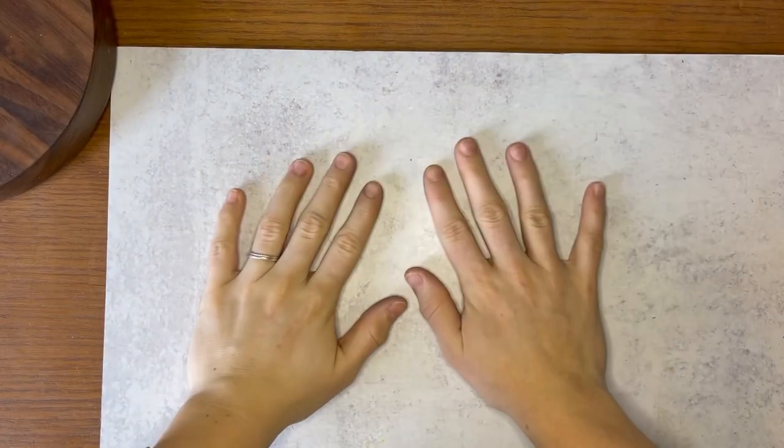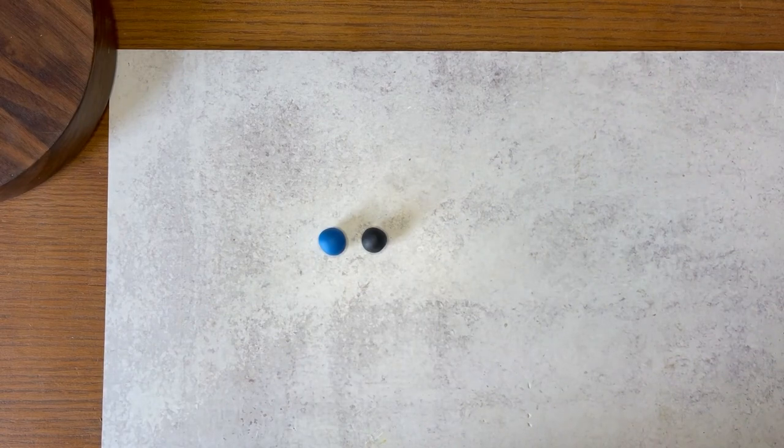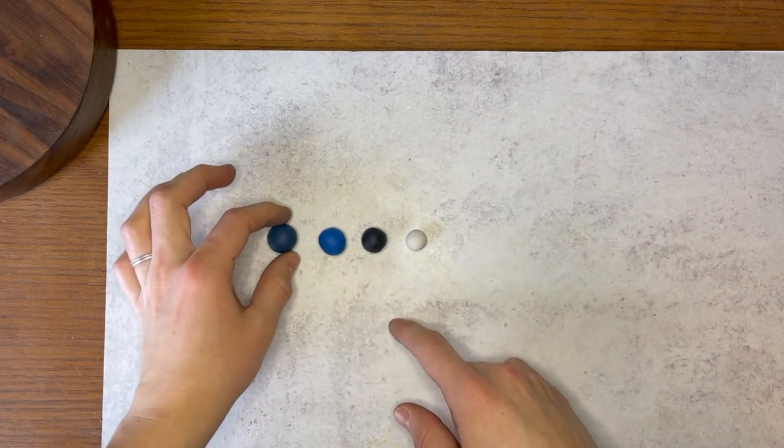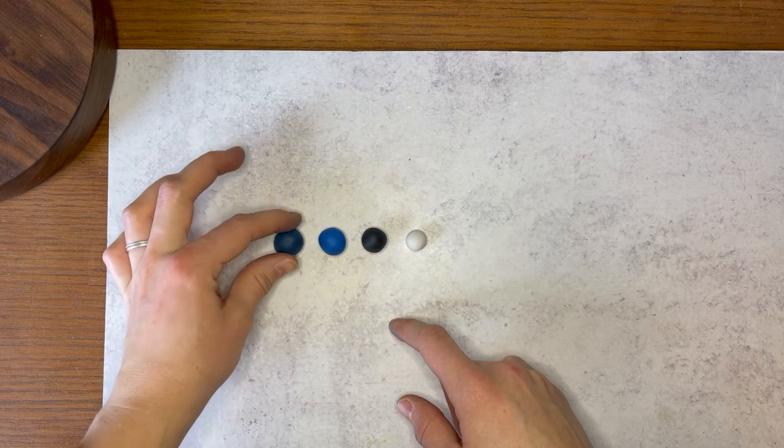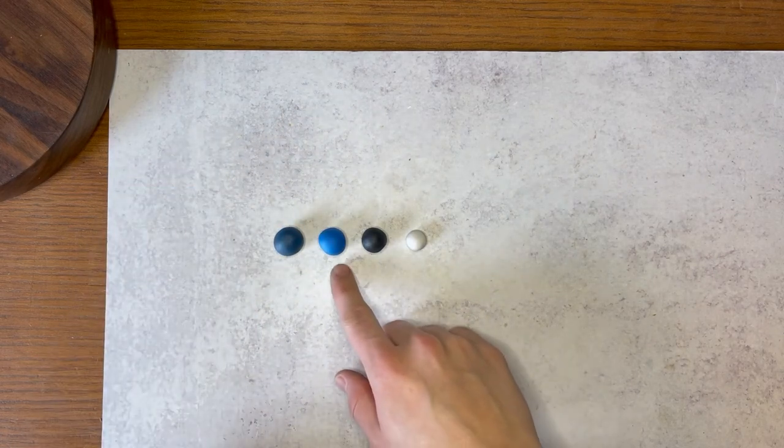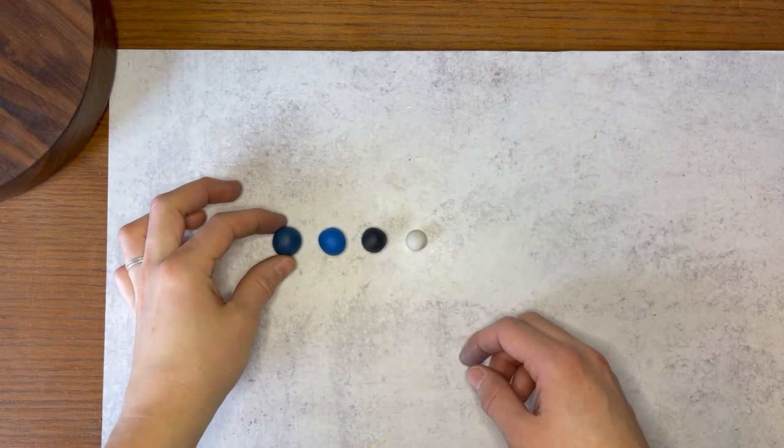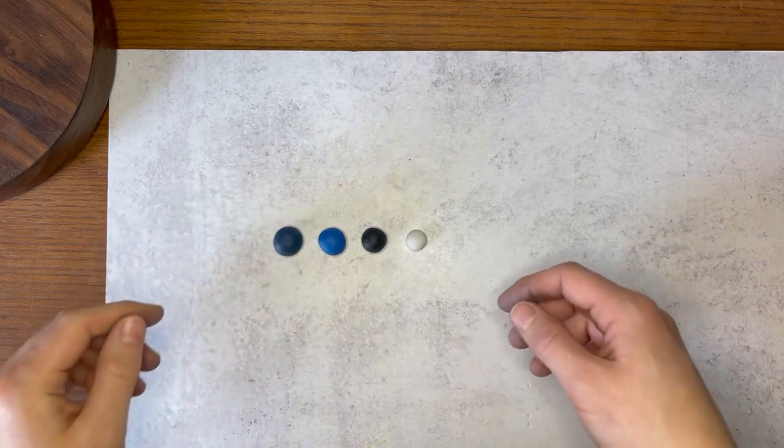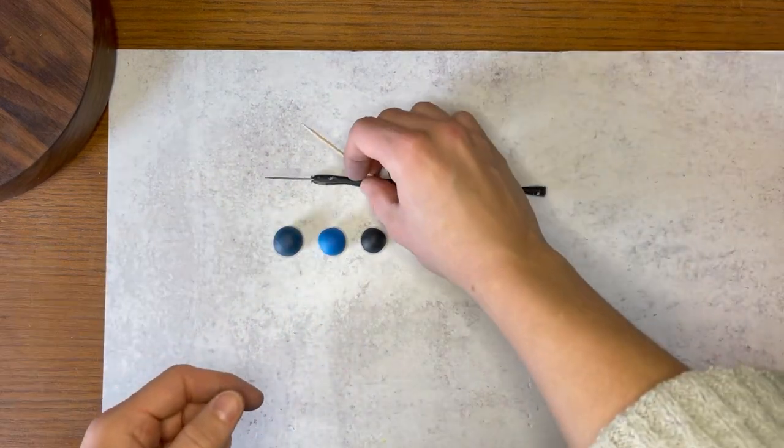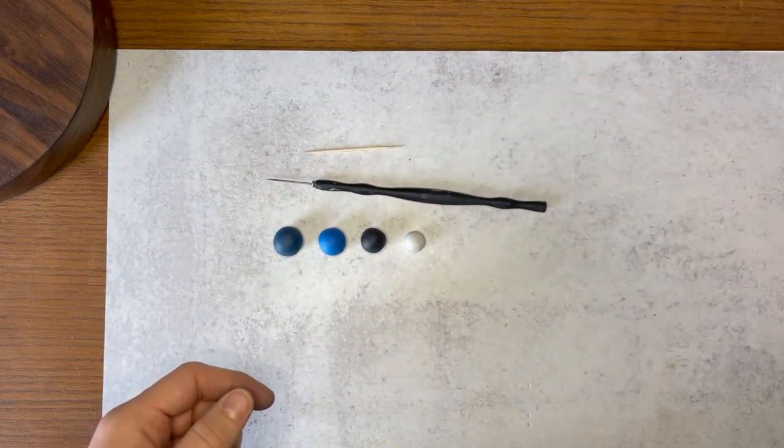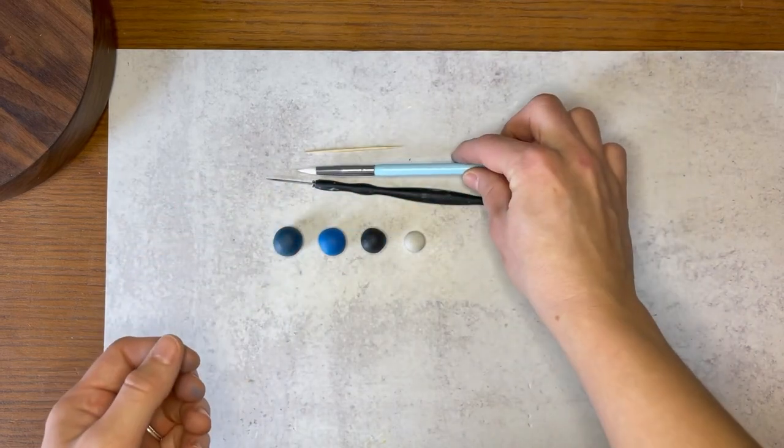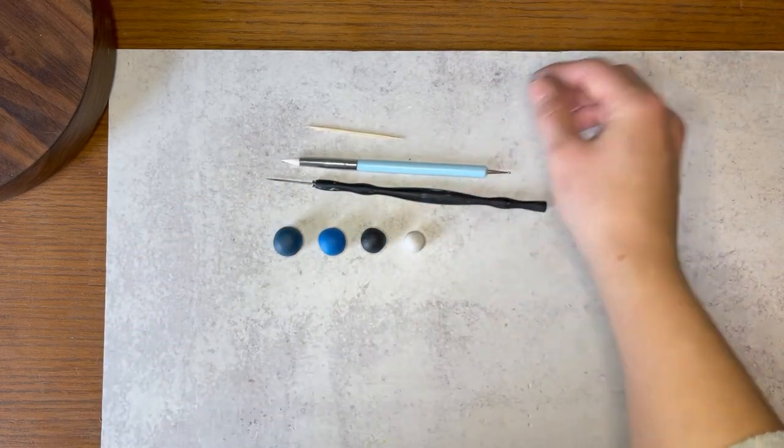Before you begin, grab a work mat. A piece of paper will do just great. You'll need your blue clay, black clay, and white clay. Mixing the black and the blue together, you'll get some dark blue clay, or mixing the white and the blue together, you'll get some light clay. I like to make my whales this darker blue clay, but you can make yours whatever shade you would like. You'll need a potter's needle or a toothpick works well, and this sculpting tool.